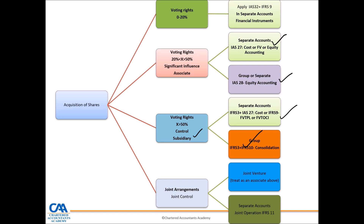When you acquire shares, you may also have joint control. Joint control is not necessarily about acquisition of shares alone — it is about having a joint arrangement where the parties have agreed on sharing of control. Joint control can result in a joint venture or a joint operation. A joint operation is accounted for under IFRS11, whereas a joint venture is accounted for as an associate.